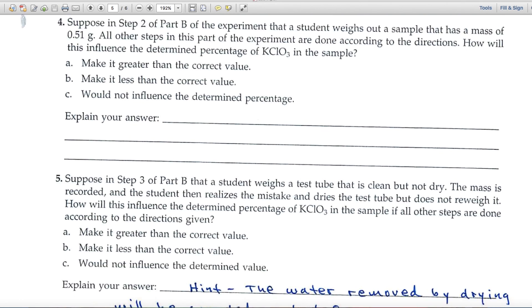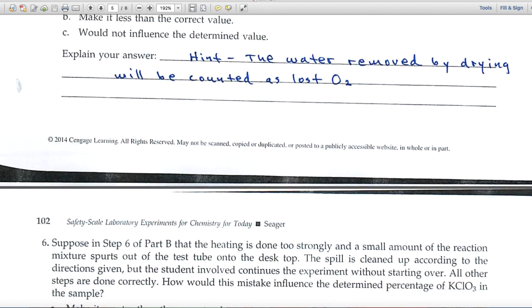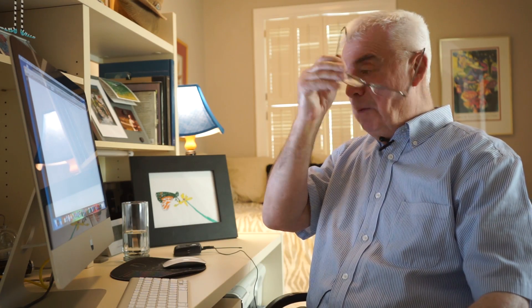Number four I think is straightforward. Number five, here's a hint for you: the water removed by drying will be counted as lost O2. Number six, the hint: the lost mass will appear to be lost O2. And that's it. Lots of calculations, some tough questions at the end. Hope you have fun. Remember you can email me or call at any time.